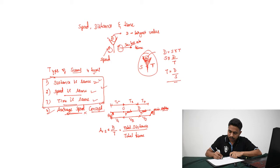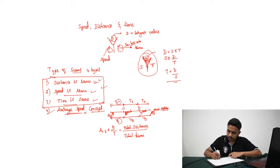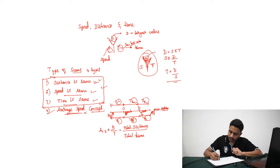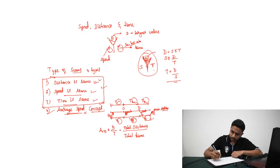The bus starts from A and moves with velocity V1, reaching substation C in time T1. Then it moves with velocity V2 and takes time T2 to reach the next substation. From substation D to reach main station B, it takes time T3 with velocity V3. From the Y diagram, we can easily get the formula for average speed.